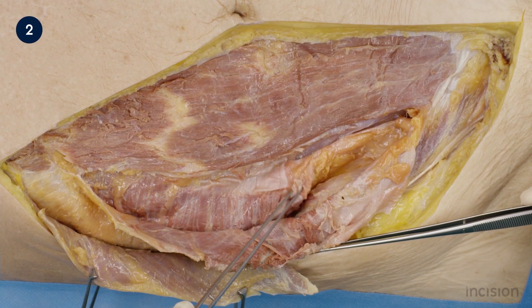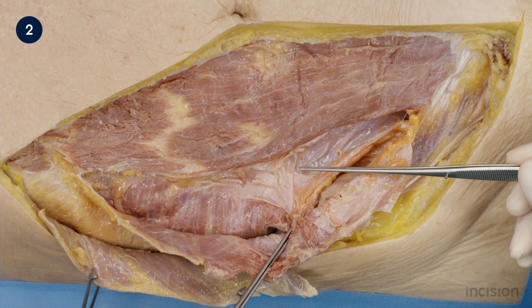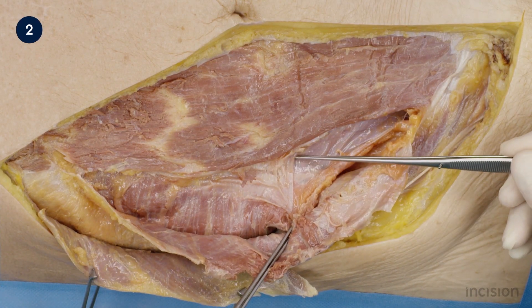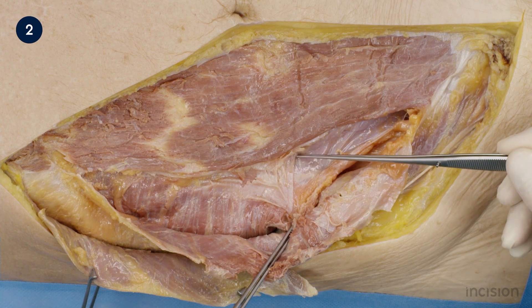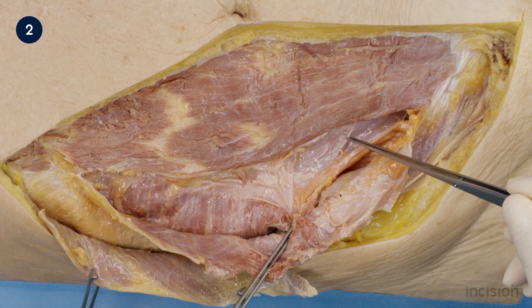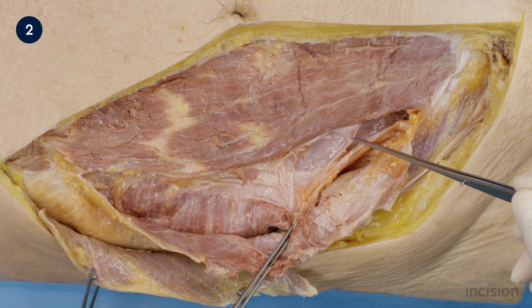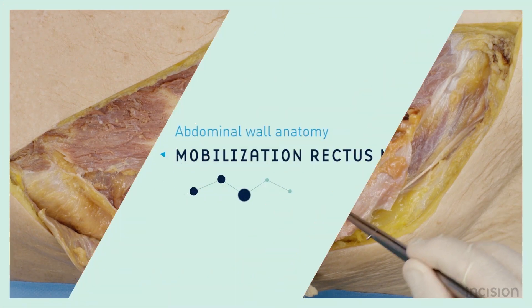At the point of the arcuate line of the abdomen, the posterior rectus fascia ends. Caudal to this point, the peritoneum lies directly posterior to the rectus muscle.